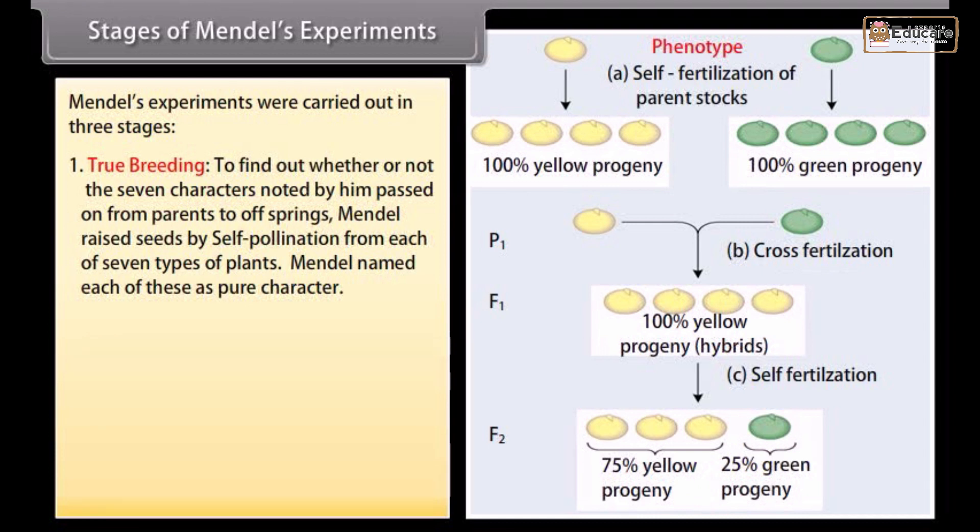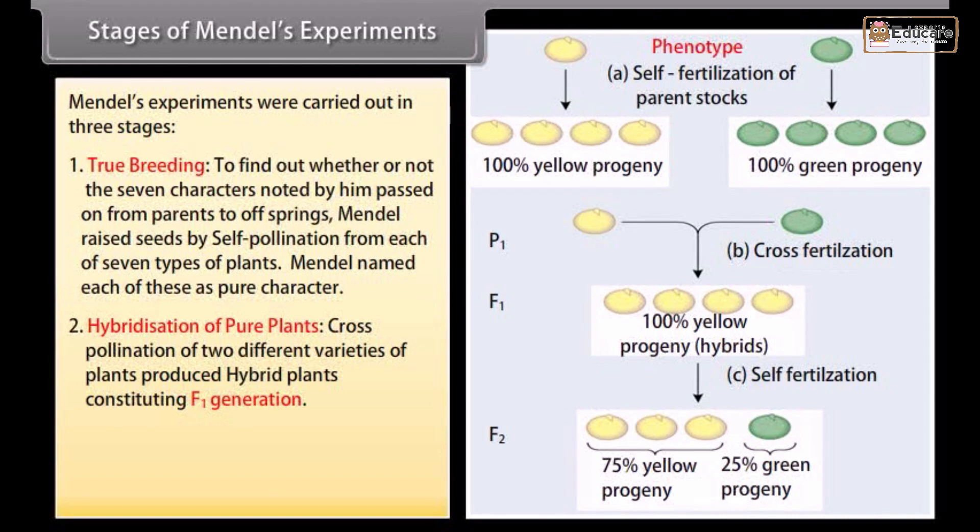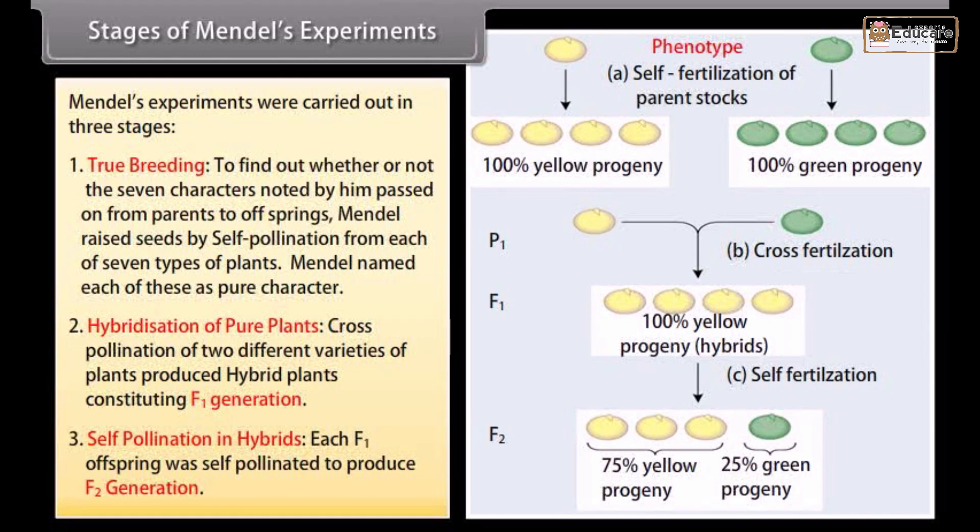Hybridization of pure plants. Cross-pollination of two different varieties of plants produced hybrid plants constituting F1 generation. Self-pollination in hybrids: Each F1 offspring was self-pollinated to produce F2 generation.